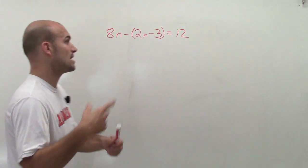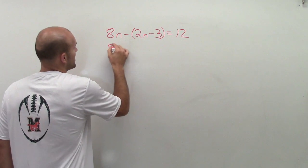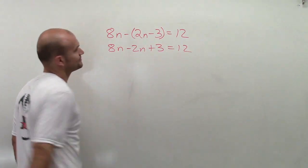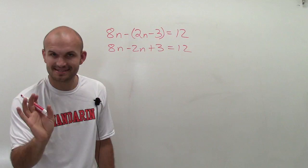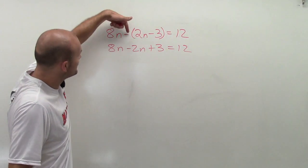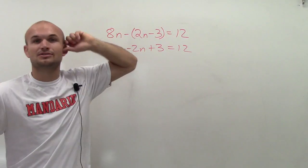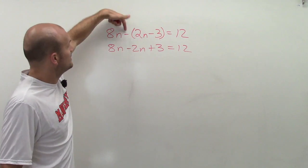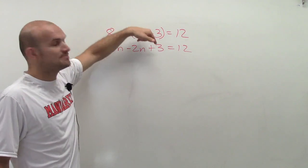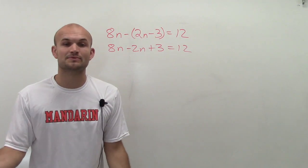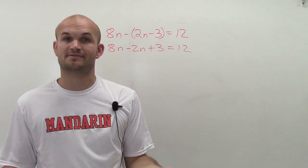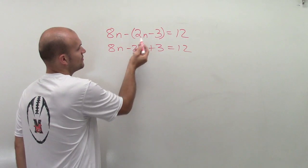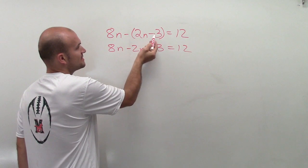equals 12. Listen, I'll say it two ways: negative 1 times 2n is negative 2n, negative 1 times negative 3 is positive 3. The other way - sometimes we think of the negative symbol as the opposite. The opposite of positive 2n is negative 2n, the opposite of negative 3 is positive 3.